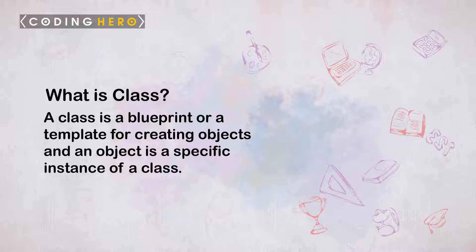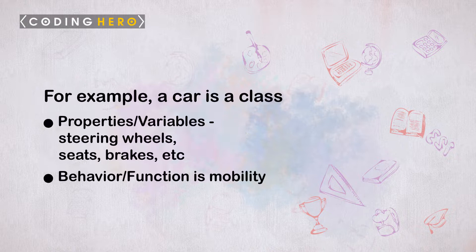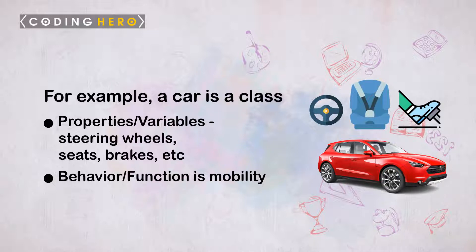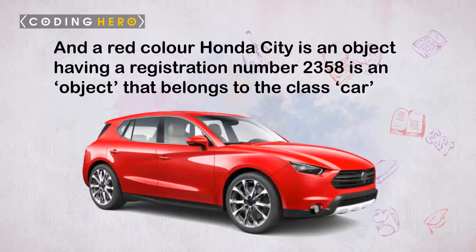These objects provide a better and clear structure for the program. For example, a car can be an object with its properties such as its color, model, price, and brand, and its behavior would be acceleration, slowing down, and gear change. A class is a blueprint or a template for creating objects, so an object is a specific instance of a class containing real values instead of variables.